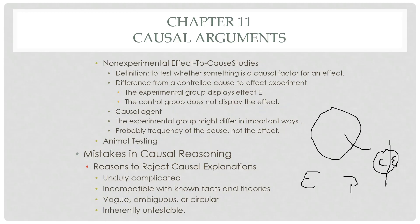That is the non-experimental effect-to-cause study. The hallmark is that the effect is known and the cause is not. As a practical matter, when distinguishing between these three methods: the giveaway for the experimental cause-to-effect is that those conducting the experiment know the cause and introduce it to the experimental group. In the cause-to-effect study, the cause is known but those conducting the study do not introduce it — those in the experimental group were exposed by their own actions or circumstances. In the effect-to-cause study, the hallmark is the effect is known and the cause is not, and it's also a study, so those exhibiting the effect were not exposed by those conducting the study.